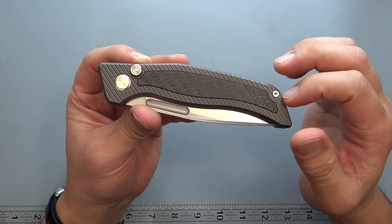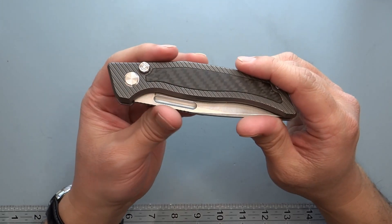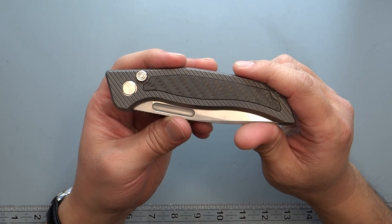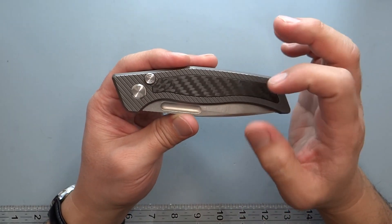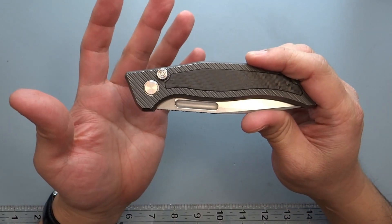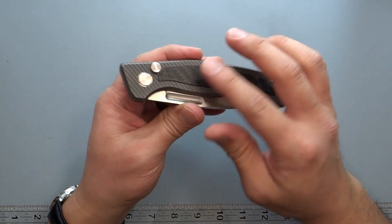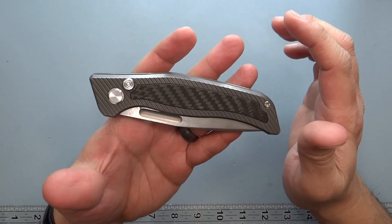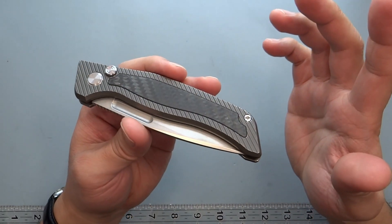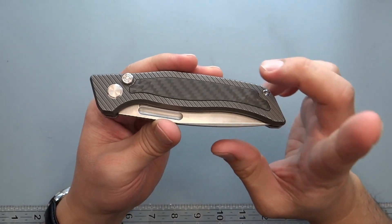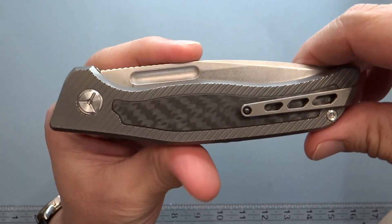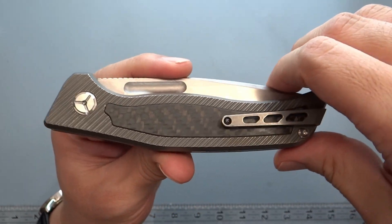This is 6.2 ounces, that's 31 quarters. Basically, a quarter is about 0.2 ounces, a penny is 0.1 ounces, so you can put that onto any knife you have available. If you have an iPhone 13 that weighs 6.14 ounces, this weighs a touch more than an iPhone 13, so that's pretty much spot on to that weight.